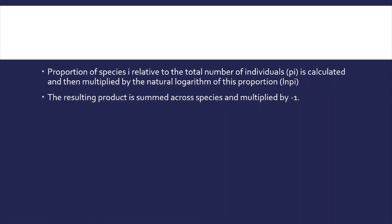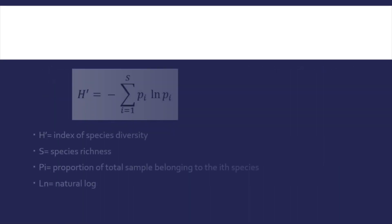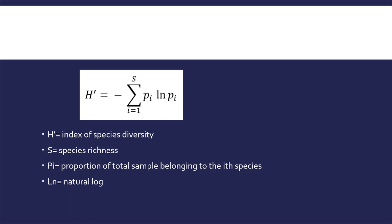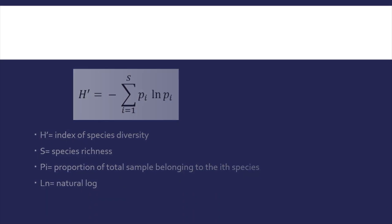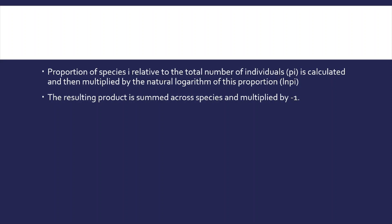The formula uses pi, the proportion of species i relative to the total number of individuals. You take the natural logarithm of the proportion of species i, multiply it by that proportion, sum the resulting products across all species, and then multiply by minus 1 to obtain the Shannon-Wiener Index value.